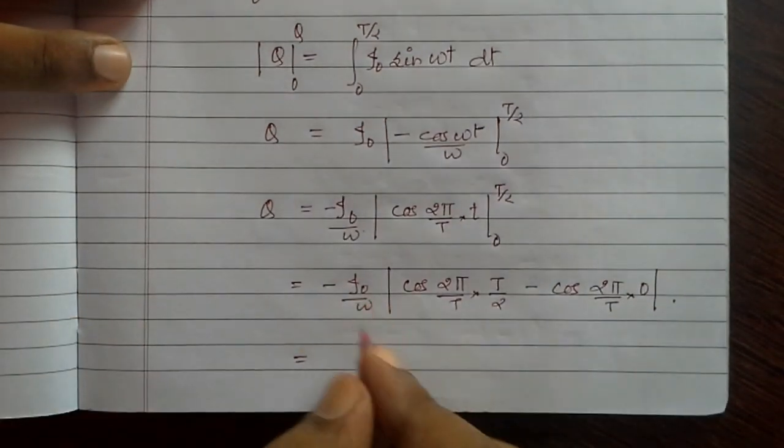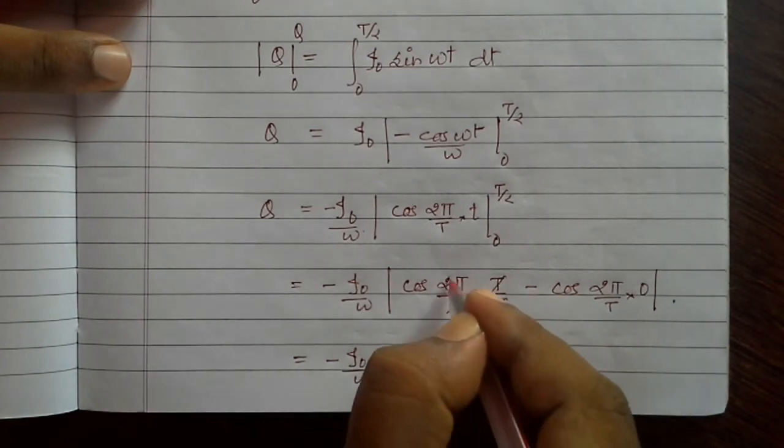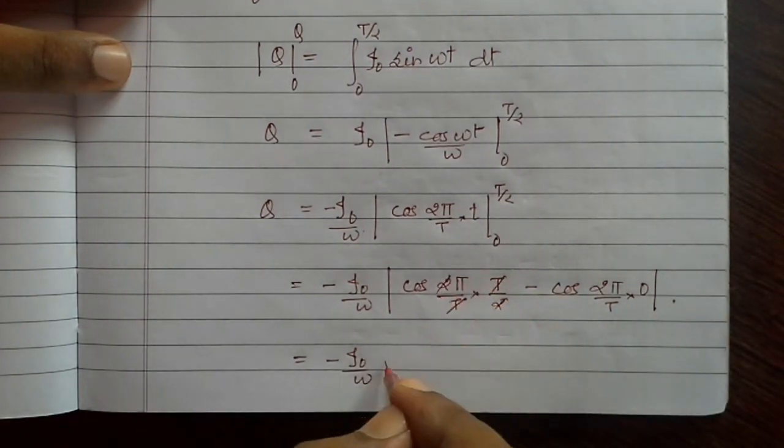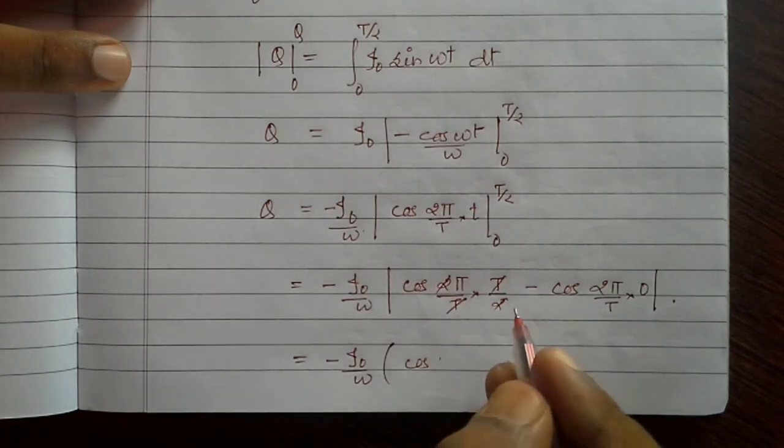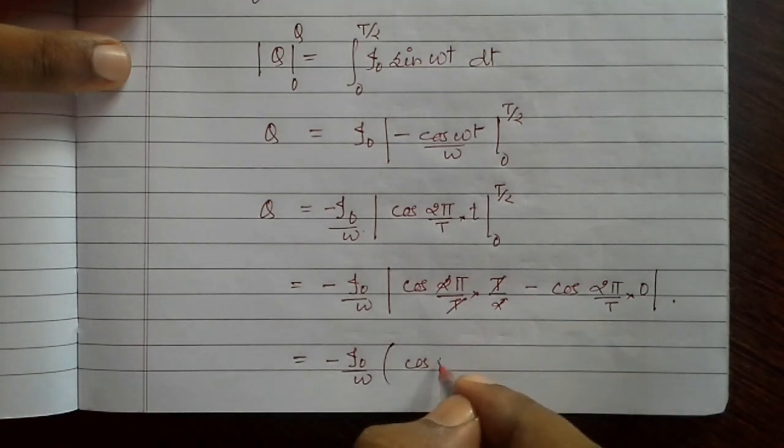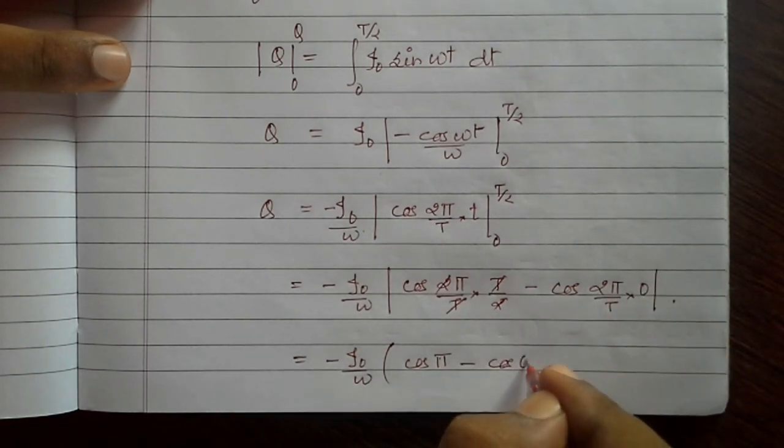It will come to minus i0 by omega. We can cancel this T by 2, 2 out. So it will come to cos pi minus cos 0.